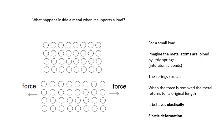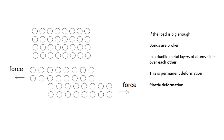If the load is big enough, you'll start breaking bonds. In a ductile metal, the layers of atoms will slide over each other. This is permanent deformation, or another word for that is plastic deformation. For small loads we get elastic deformation—it returns to its original length. For larger loads, it's plastic deformation, permanent deformation. If you see a plastic surgeon to get a nose job, that is permanent; your nose is that shape forever. It's plastic deformation.